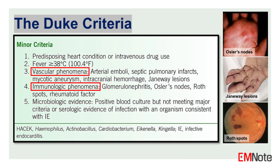Minor criteria include: 1. Predisposing cardiac conditions or intravenous drug abuse; 2. Fever; 3. Vascular phenomena such as embolic events, Janeway lesions, etc.; 4. Immunologic phenomena such as glomerulonephritis, Osler nodes, Roth spots, etc.; 5. Microbiological evidence not meeting major criteria.